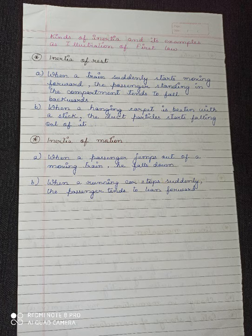A cyclist riding along a level road does not come to rest immediately after he stops pedaling. As soon as he stops pedaling, the speed gradually decreases and eventually comes to rest — it does not stop instantly. Similarly, when a running car stops suddenly, the passenger tends to lean forward because the lower part of the body, being in close contact with the car, comes to rest immediately, but the upper part stays in the state of motion and the body leans forward.